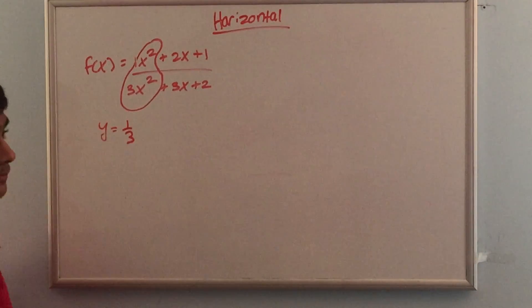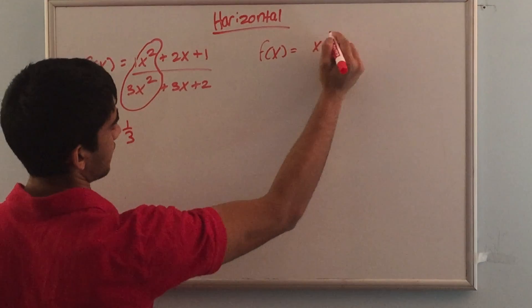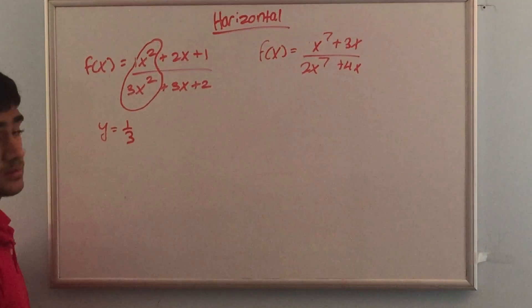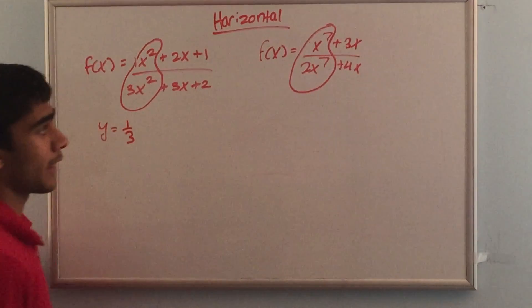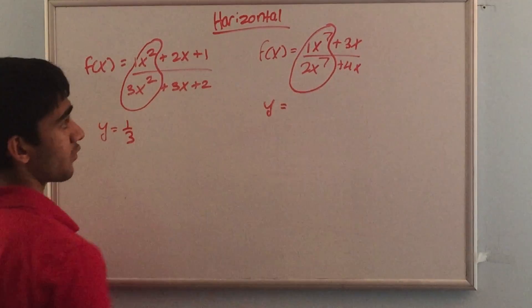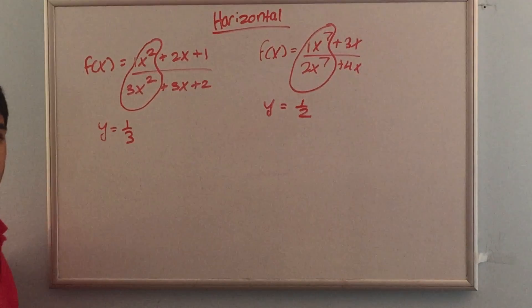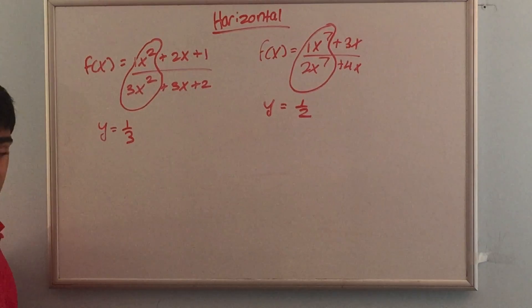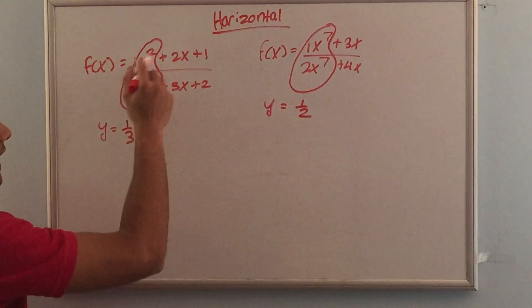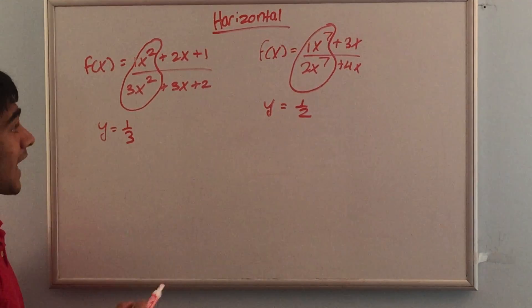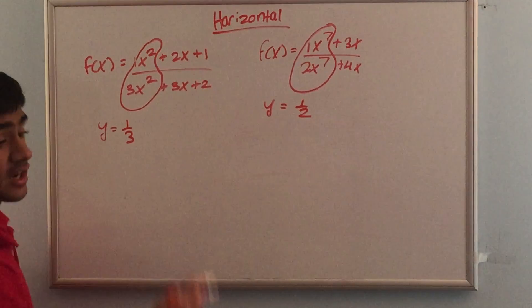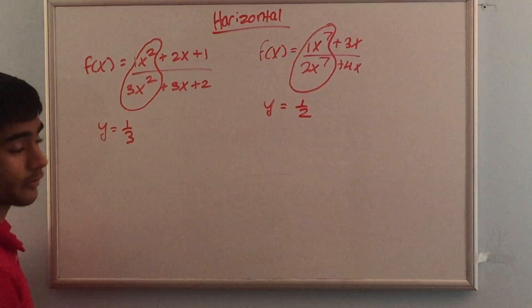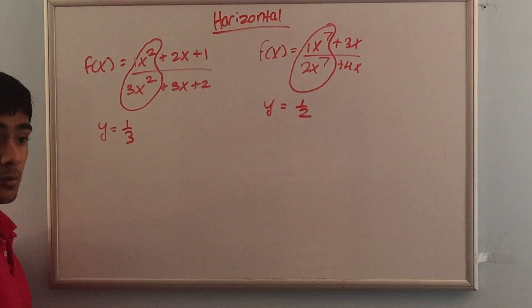For another example, f(x) = (x⁷ + 3x) / (2x⁷ + 4x): we identify the two highest powers — x⁷ in both — then compare their coefficients: 1 and 2, so the horizontal asymptote is y = 1/2. Note that we can only use this trick if the highest power in the numerator equals the highest power in the denominator, such as x² over x², or x⁷ over x⁷. If it were x⁹ over x⁷, we cannot use a horizontal asymptote — that would be an oblique asymptote.